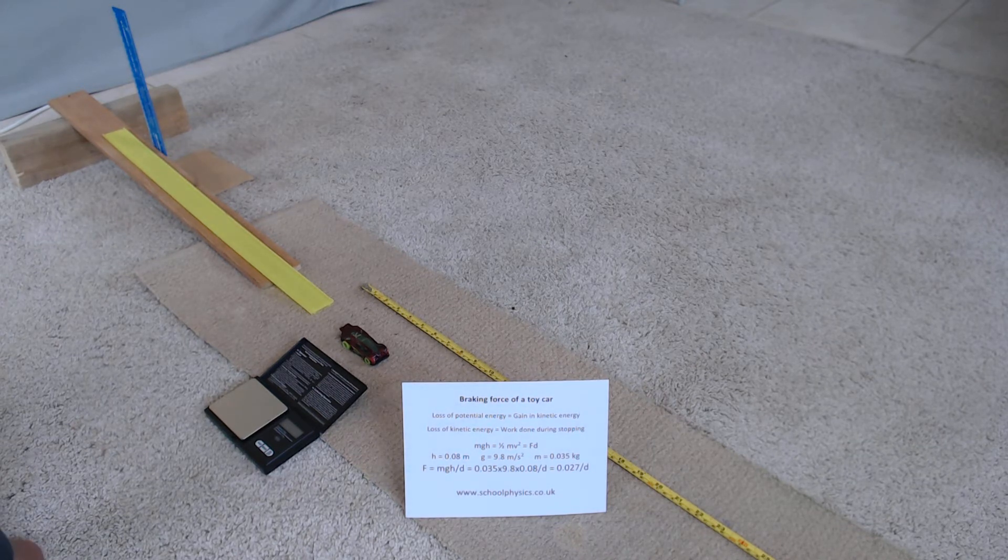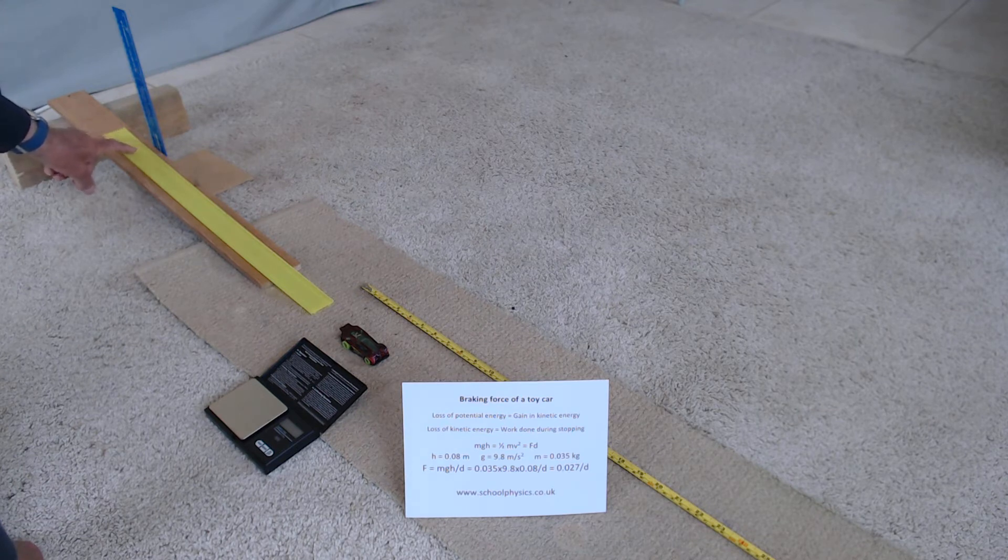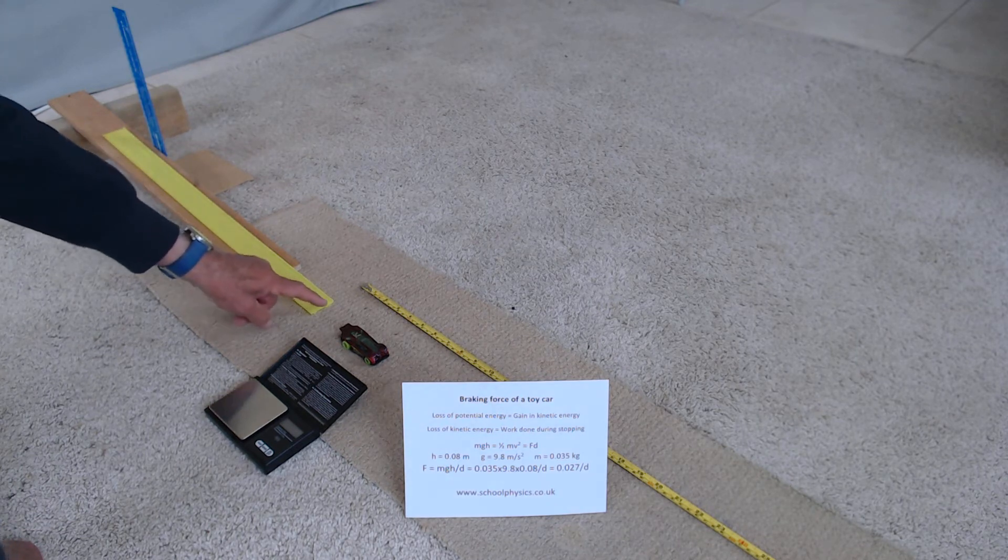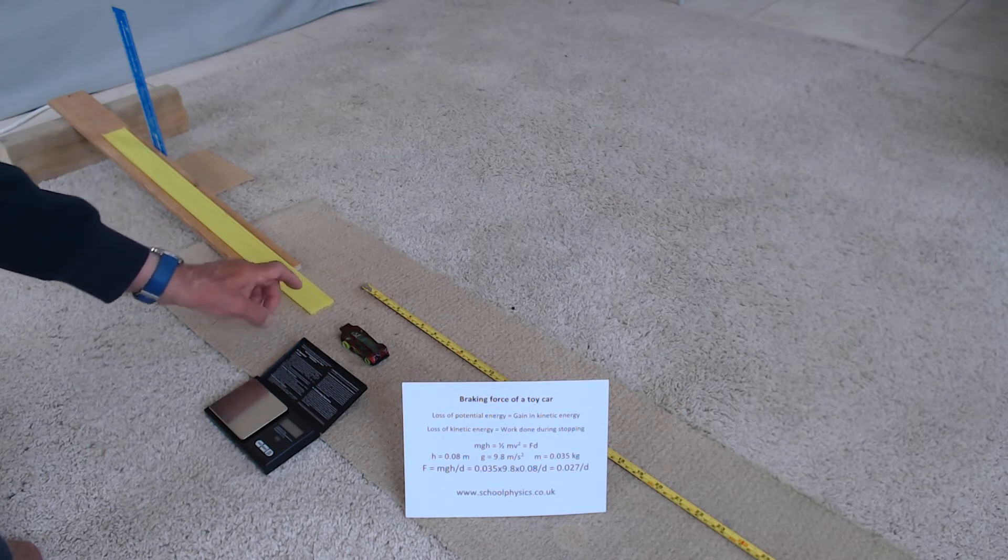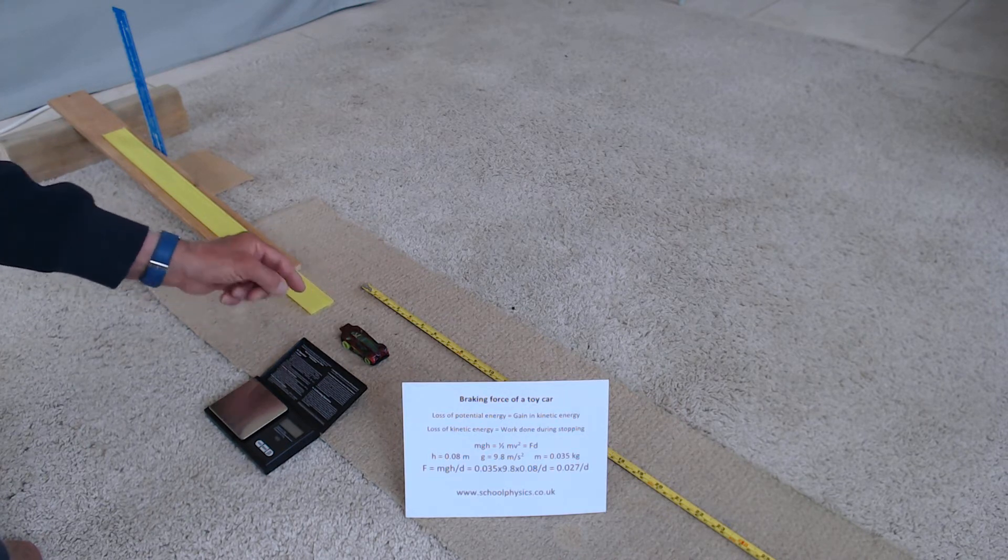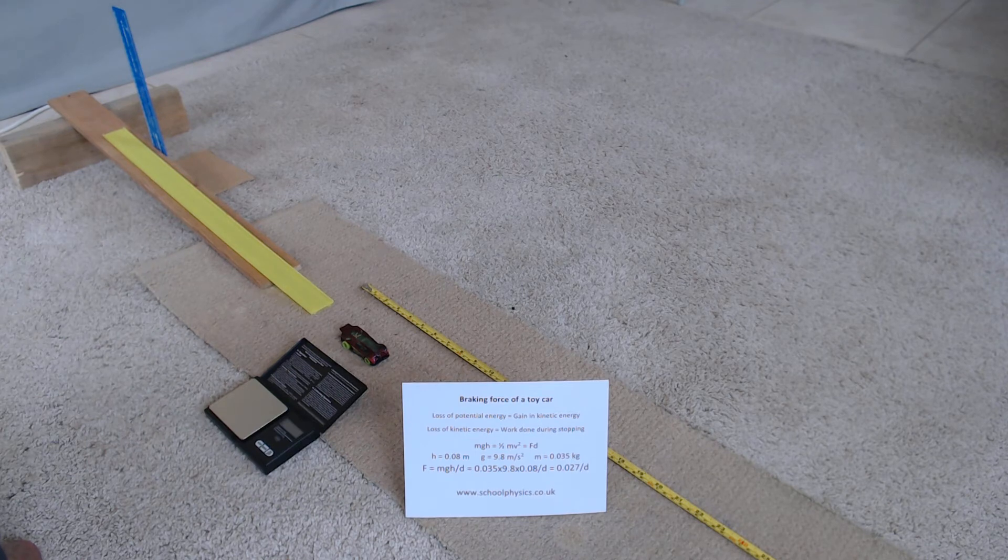Now we're going to do that by letting the car run down a ramp. And when it reaches the end of the ramp, it will be accelerated to a speed v. So the kinetic energy lost during the slowing down on the carpet will be equal to a half mv squared.